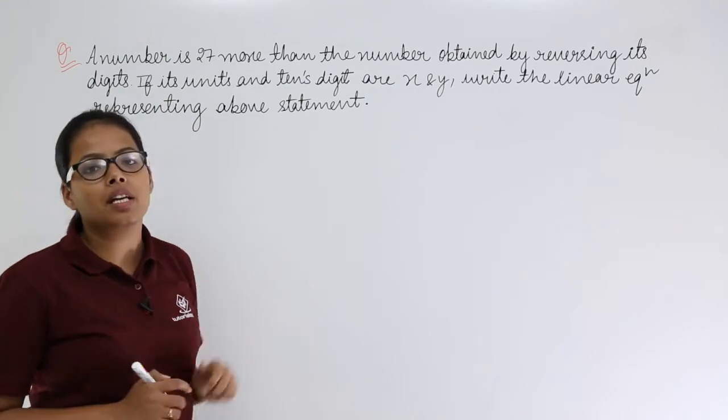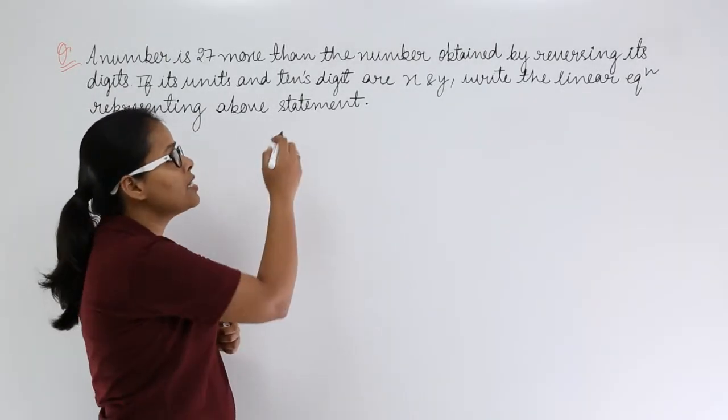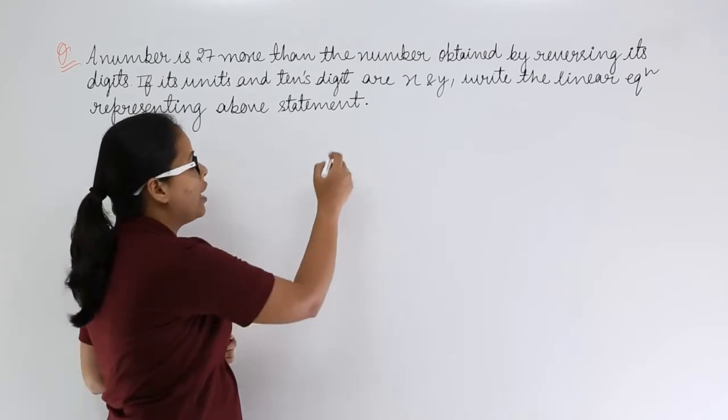If its units and tens digit are x and y, then write the linear equation representing the above statement. Now let's see what this statement is trying to say here. There is a number, let's suppose that number is A.